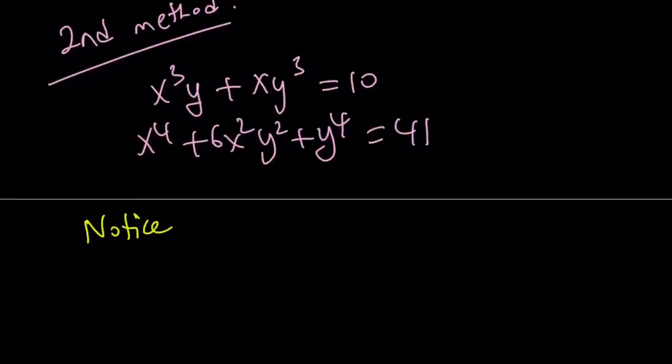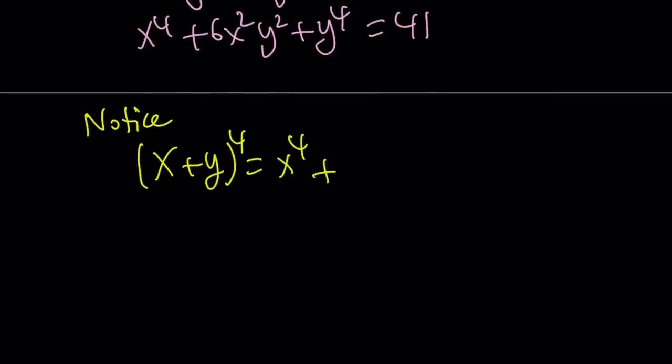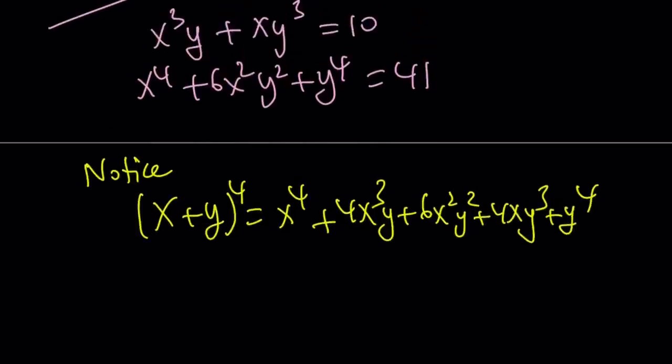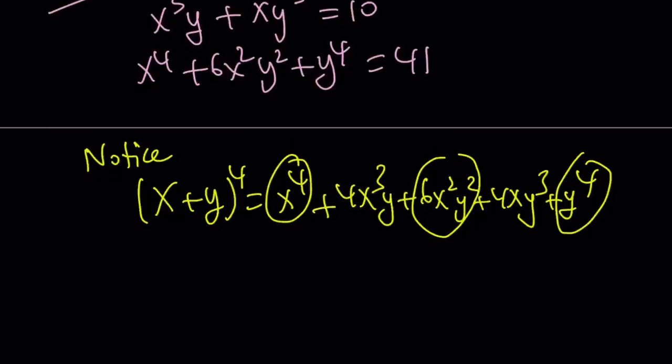I want you to notice that (x+y)⁴ can be written as x⁴ + 4x³y + 6x²y² + 4xy³ + y⁴. Now, notice that our system kind of looks like this. If you isolate this one, this one, and this one. That's how this problem was actually made. Looking at an expression like this and then breaking it down and so on and so forth.